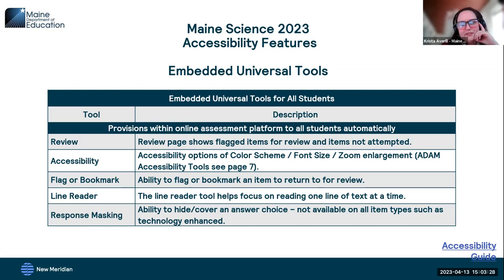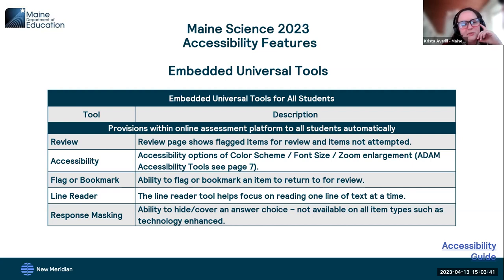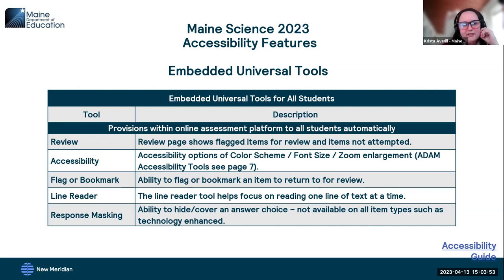We'll start with the universal tools. Universal tools are automatically available to all students who take the assessment. Embedded universal tools within the platform include things like review color scheme, font size, zoom enlargement, flagging or bookmarking items, line reader, and response masking — which is the same as answer eliminator. The best way to prepare your students is to have them interact with the practice tests available on the Maine DOE website and the Maine Science support site.